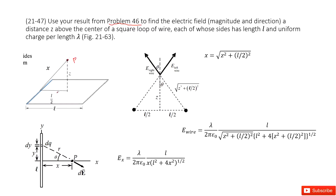In this right triangle, you can see this side length is Z and this side length is L over 2. So in this way you can find that x equals the square root of Z squared plus (L/2) squared.